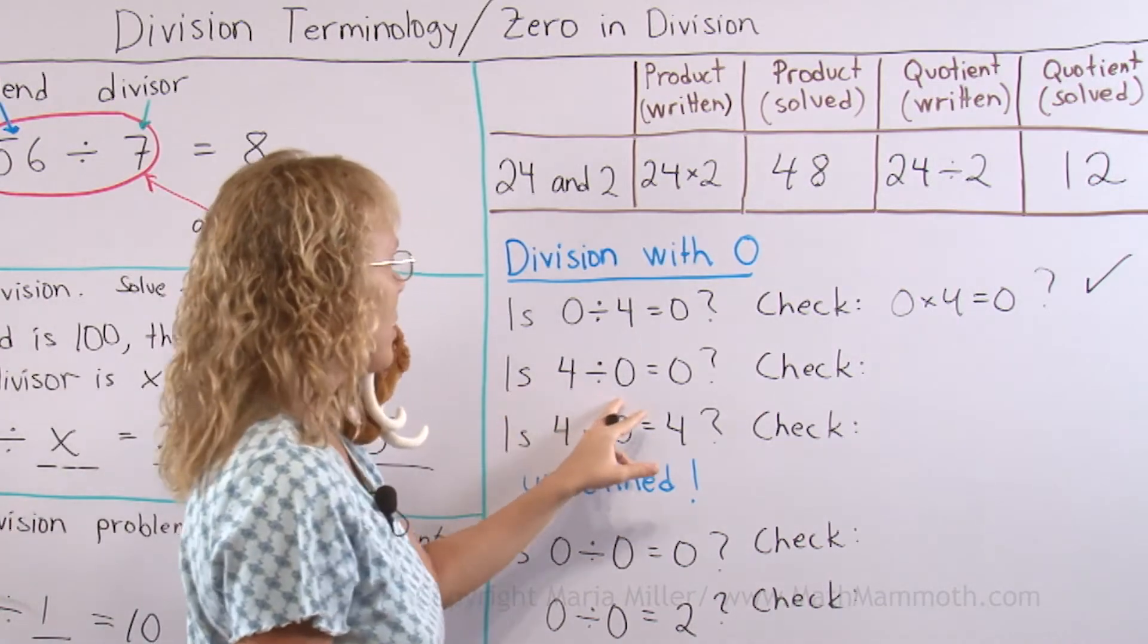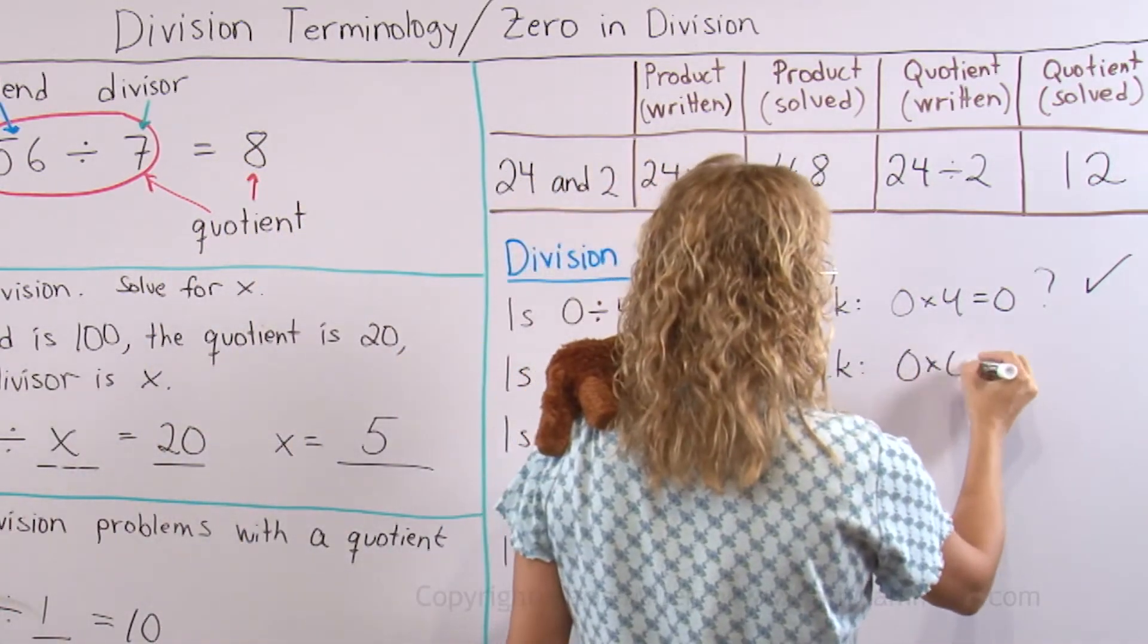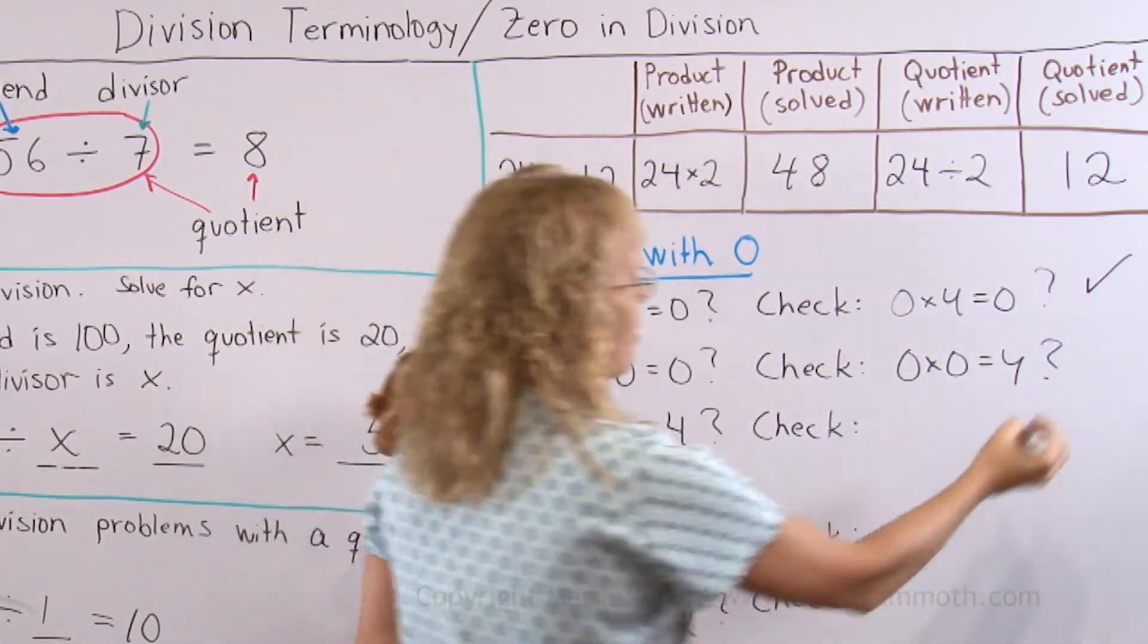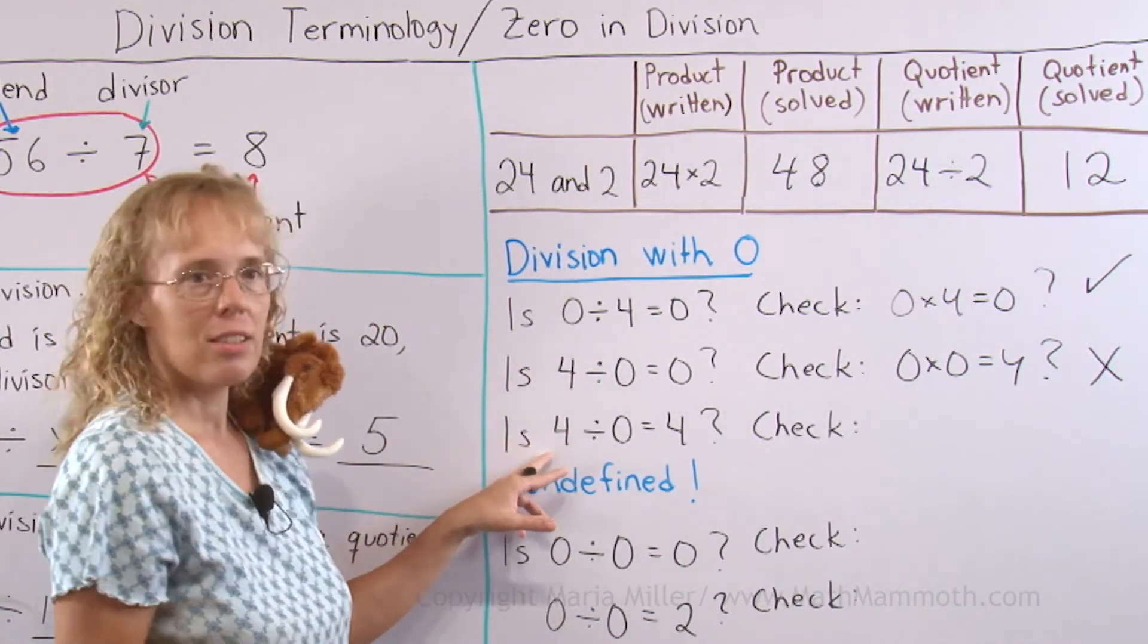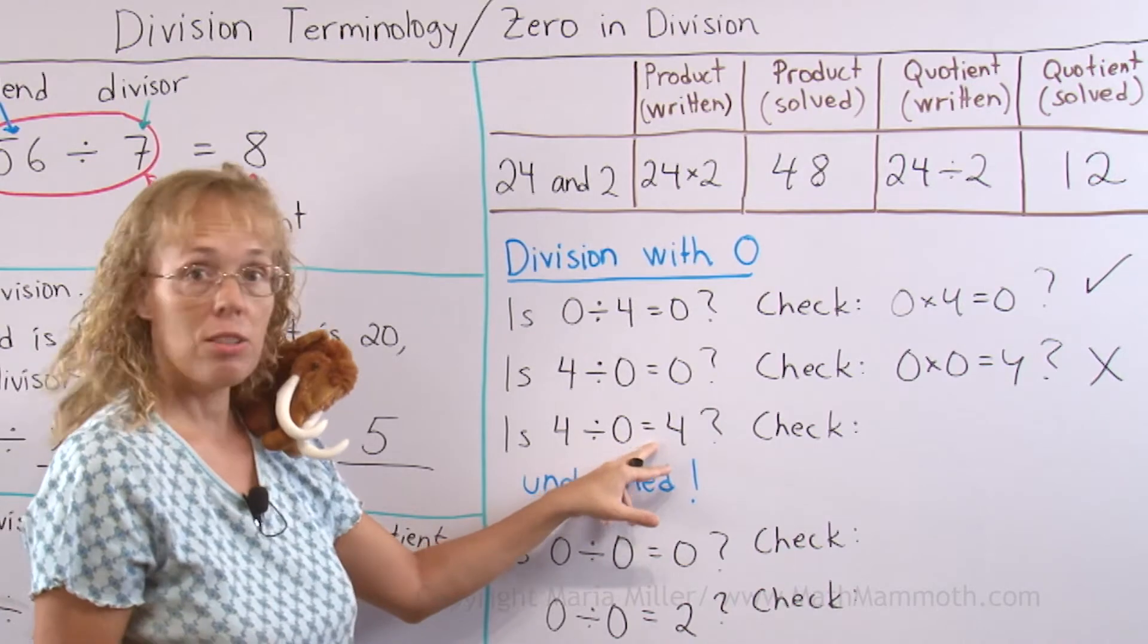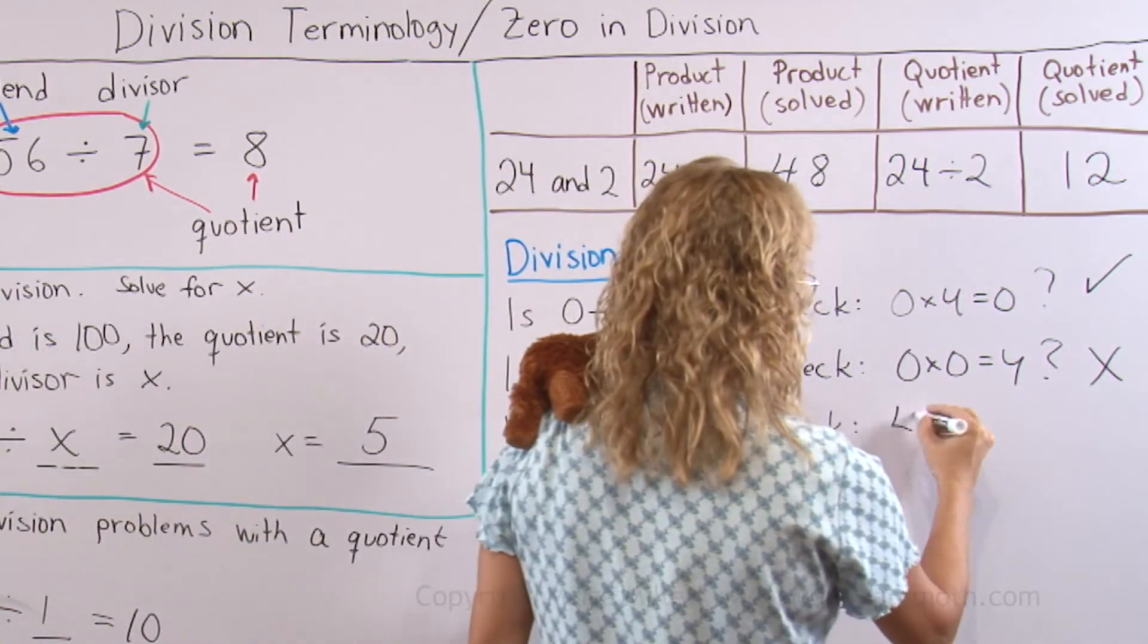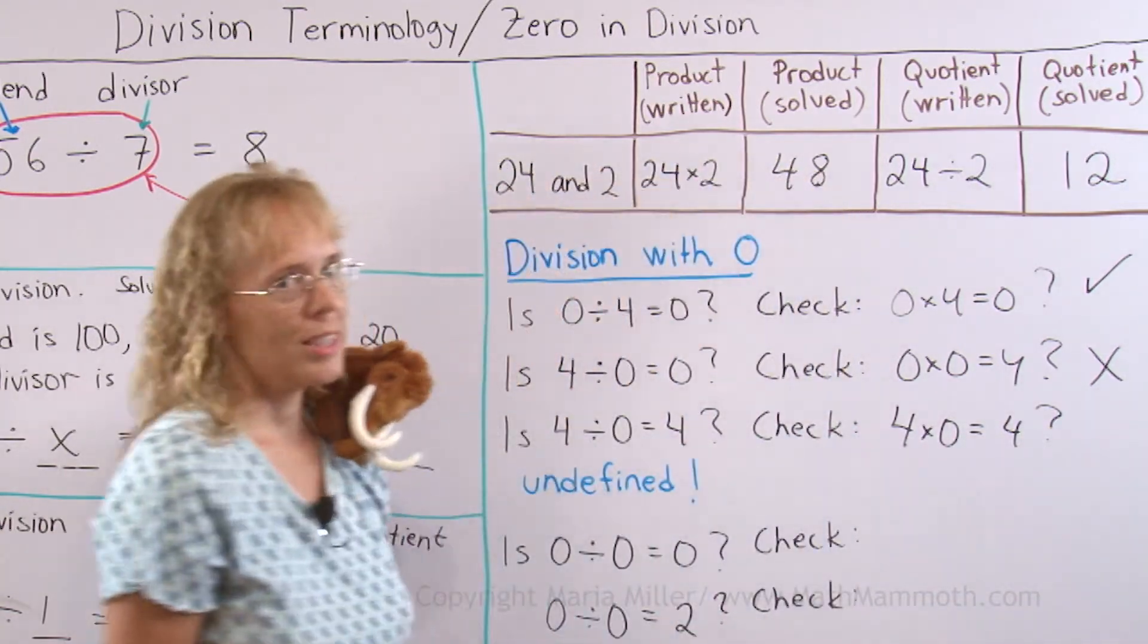How about this one? 4 divided by 0. Is it 0? I'll check. 0 times 0 equals 4. No, that does not work, as you can see. How about if we change the answer, 4 divided by 0? Maybe the answer is 4. Let's check. 4 times 0 equals 4. No, that doesn't work.